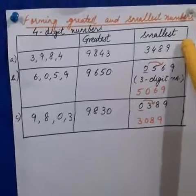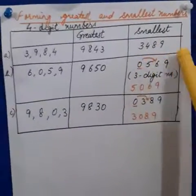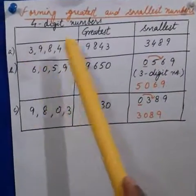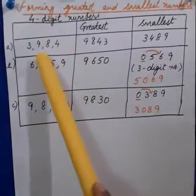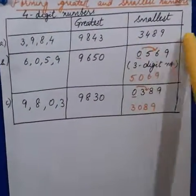Now let us move to the smallest number using digits 3, 4, 8, 9. The smallest digit is 3. Then 4, then 8, then 9. So the smallest number is 3489.